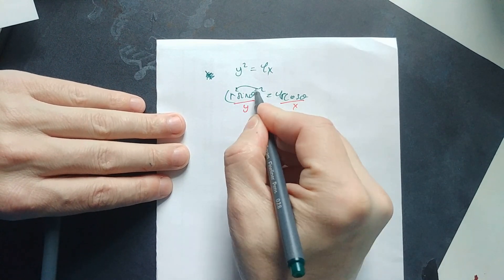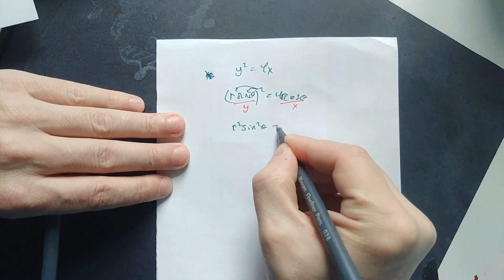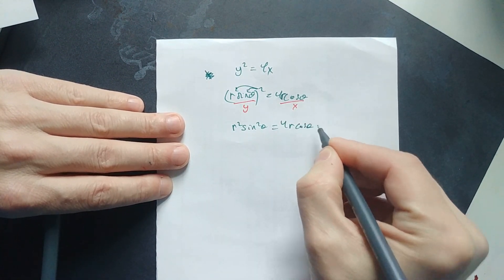Then you can distribute the square over to here and also to the sine. So you're going to have r² sin² θ = 4r cos θ.